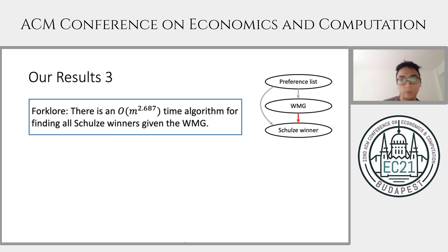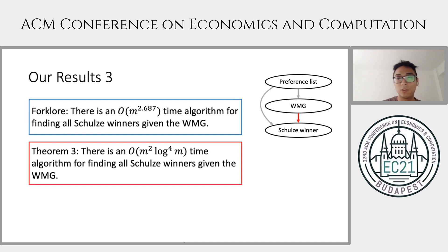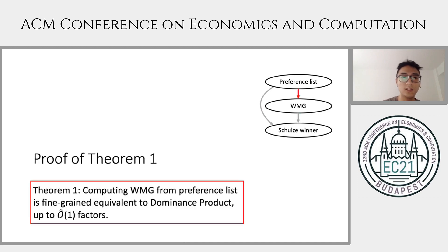Our second result is an improvement over the folklore algorithm for computing an arbitrary Schultz winner from the weighted majority graph. Given the weighted majority graph, it was known that a Schultz winner can be computed in O(m^{2.687}) time, but we improve the runtime to almost linear. For details of this proof, please read our paper or ask questions.